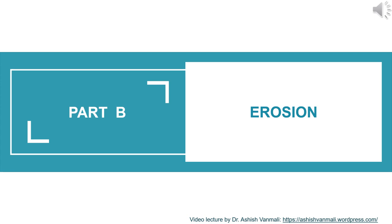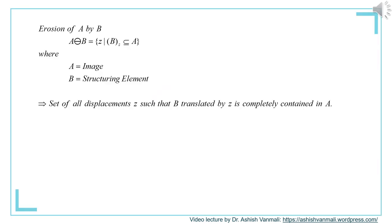Now let's move to part B, that is erosion. The erosion of image A by structuring element B is the set of all Z such that B_Z is contained in A. Here we use B, not B-cap. Whenever we move structuring element B, it should be totally contained in A — meaning wherever there are 1s in B, A should also have 1s at those locations. If totally contained, the output is 1; otherwise it is 0.